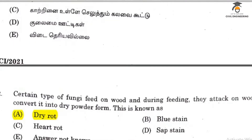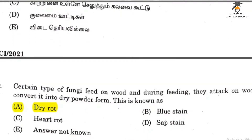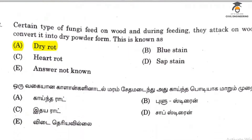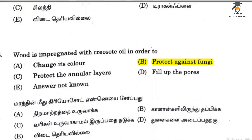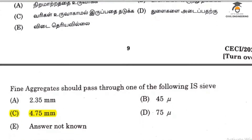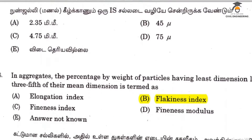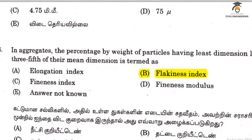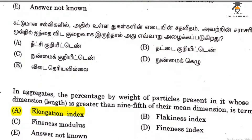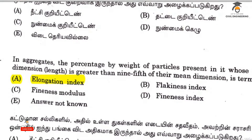We can compensate for workability. To protect against fungi, option B is used. Fine aggregate size is on the 4.75 mm sieve. The aggregate percentage on the least dimension to length is the elongation index.